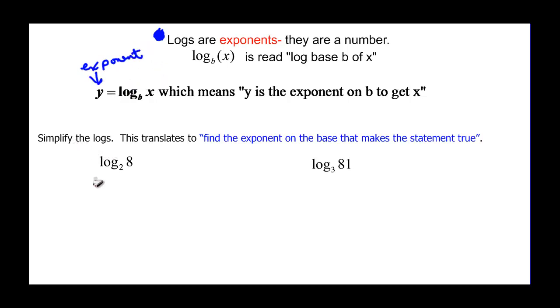So we want to simplify these logs. And remember, it translates to find the exponent on the base that makes the statement true. So if I have log base 2 of 8, I'm really saying 2 to the what is going to be equal to 8? 2 times 2 times 2 is 8, so 2 to the third.